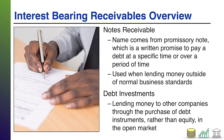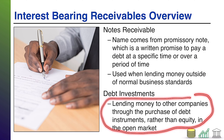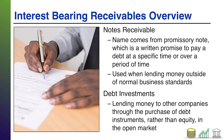So notes receivable are one of our interest-bearing assets. Another is debt investments — when we lend money to other companies by buying their debt instruments in the open market, those instruments typically state some sort of interest they bear. That's different from equity instruments like stock, where you make money through price changes or dividends. With debt instruments, some of your money comes in the form of interest.